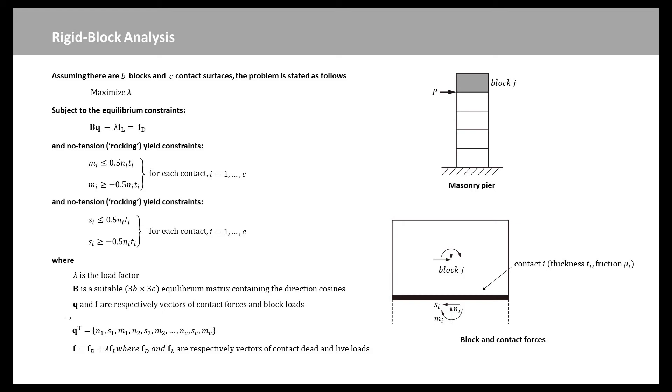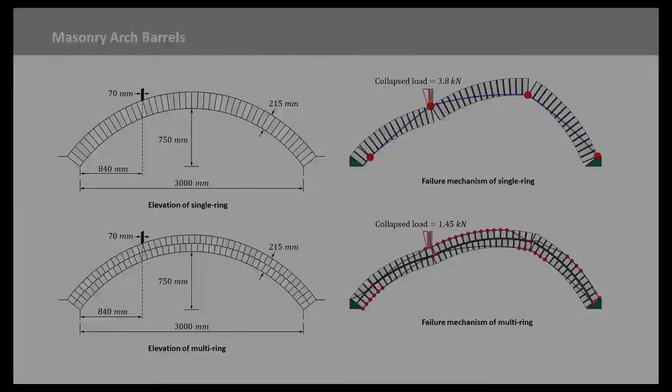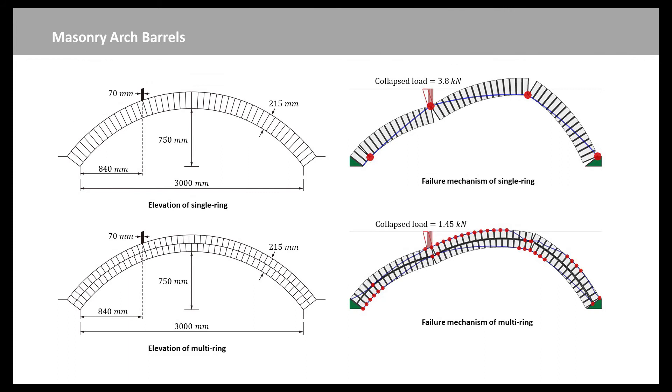Actually, we have a nonlinear constraint where we have finite compressive strength. So we maximize lambda subject to equilibrium and yield. The nice thing about this is it's a linear optimization problem, which means it is easy to solve. In terms of verification, the rigid block analysis was validated by two 3-meter span bare arch ribs. As no backfill material was present, there was no soil structure interaction. We get a good correlation between the numerical and experimental results.